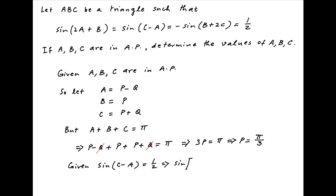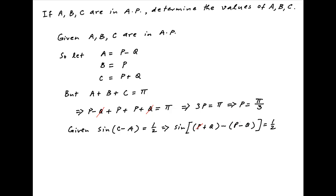Now we are also given that sin of C minus A is equal to half. Putting in the values of C and A assumed above, we get sin of P plus Q minus brackets P minus Q is equal to half.